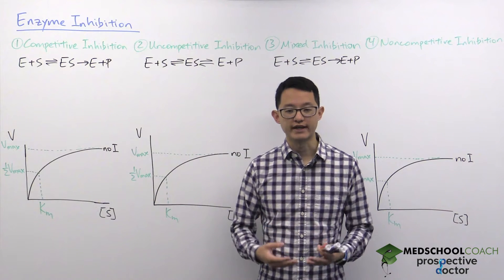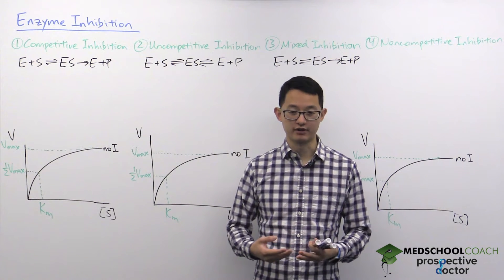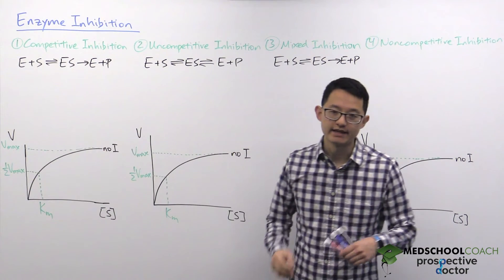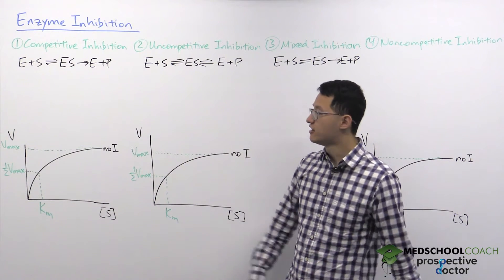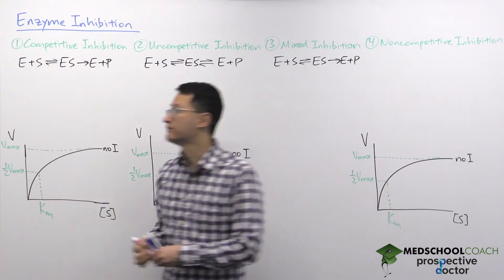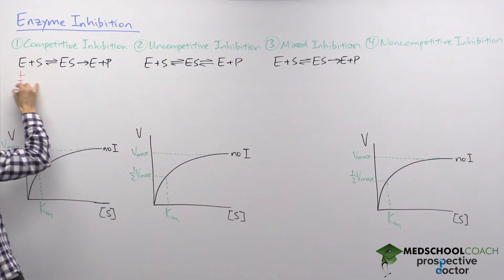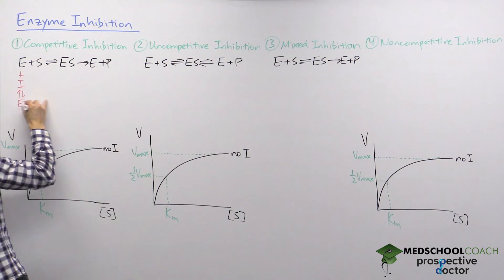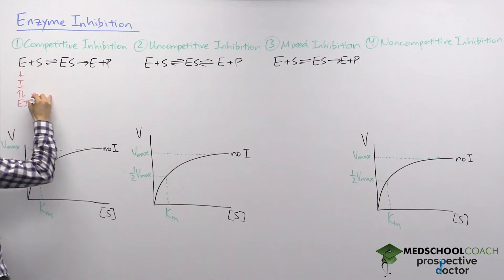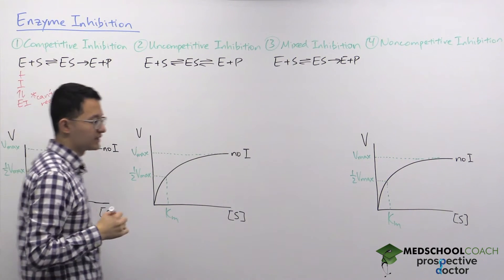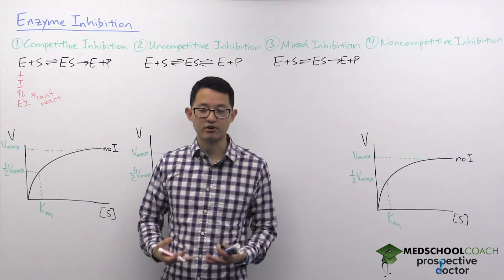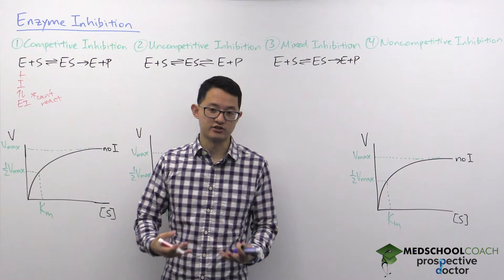In a subsequent video we're going to look at how inhibitors affect Lineweaver-Burk plots. Our first inhibitor is the competitive inhibitor. In competitive inhibition, the inhibitor binds directly to the enzyme to form an enzyme-inhibitor complex, EI. This enzyme-inhibitor complex cannot react, so when the inhibitor binds to the enzyme you're not able to get the enzyme to produce the product you want, and the reaction is being inhibited.